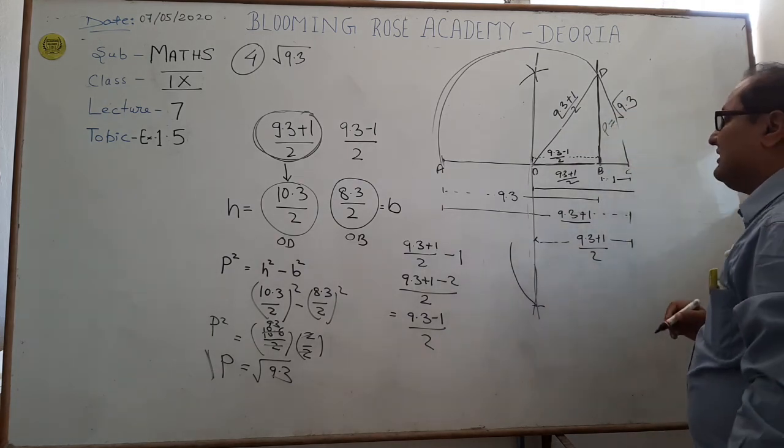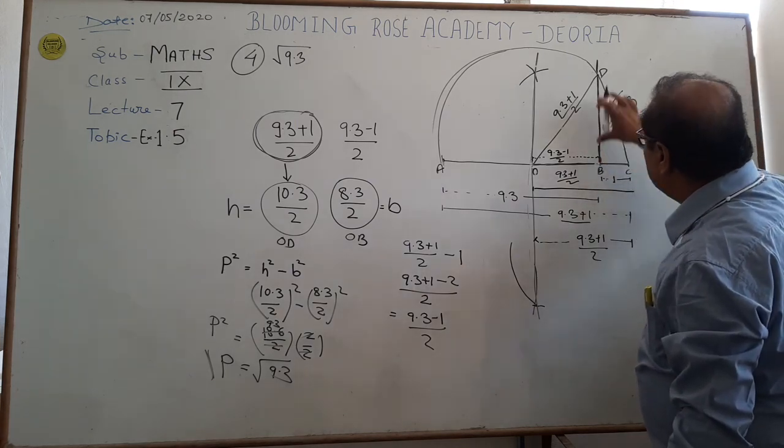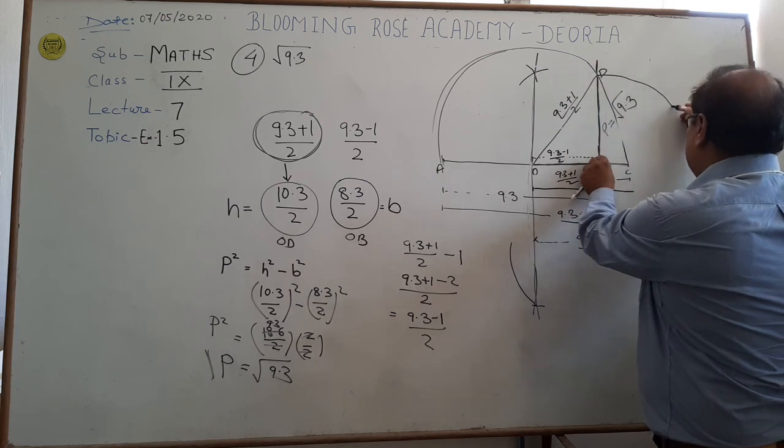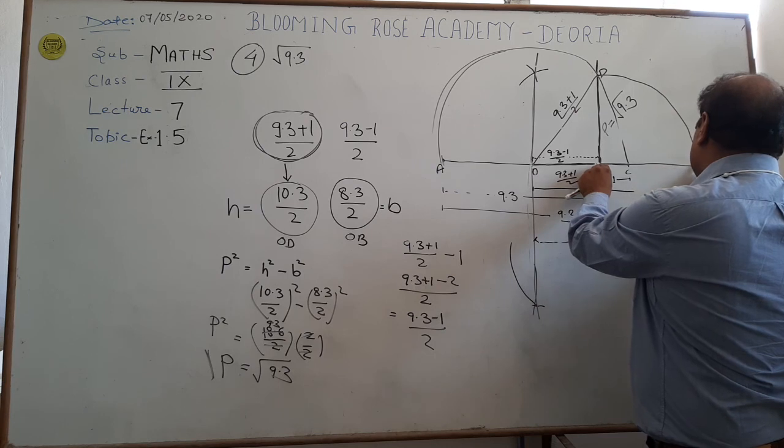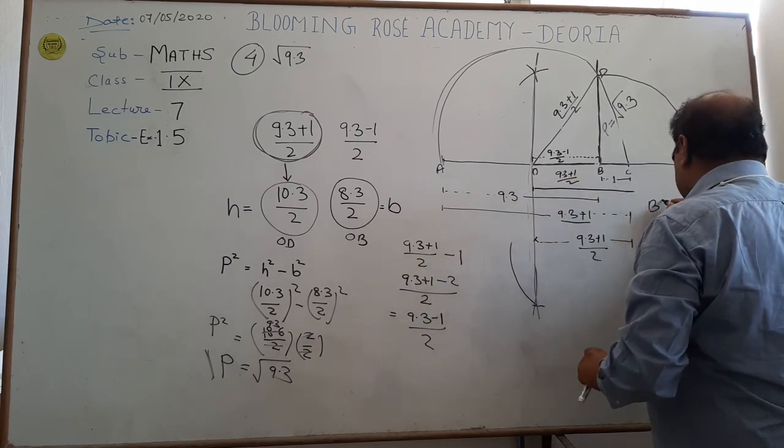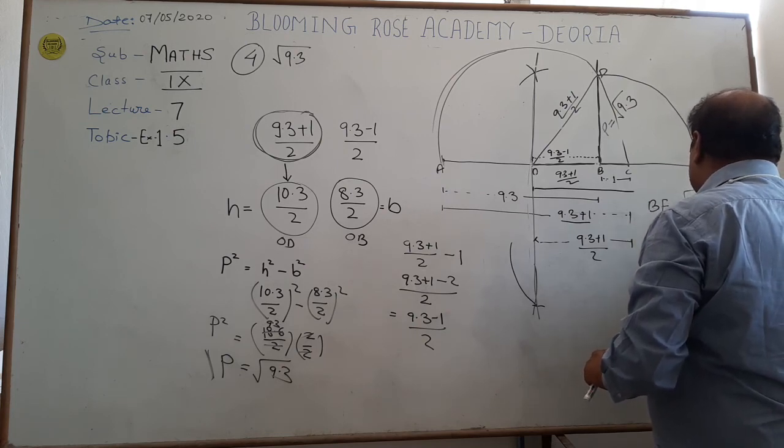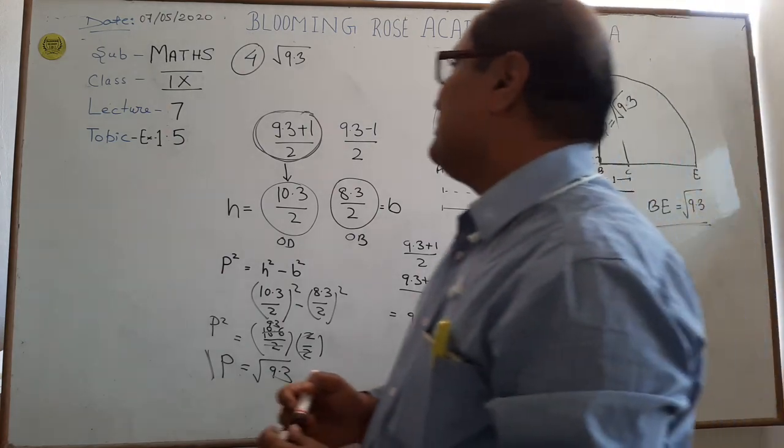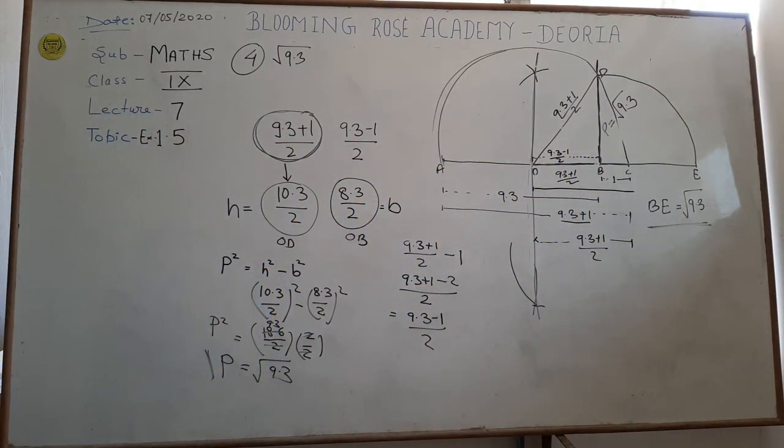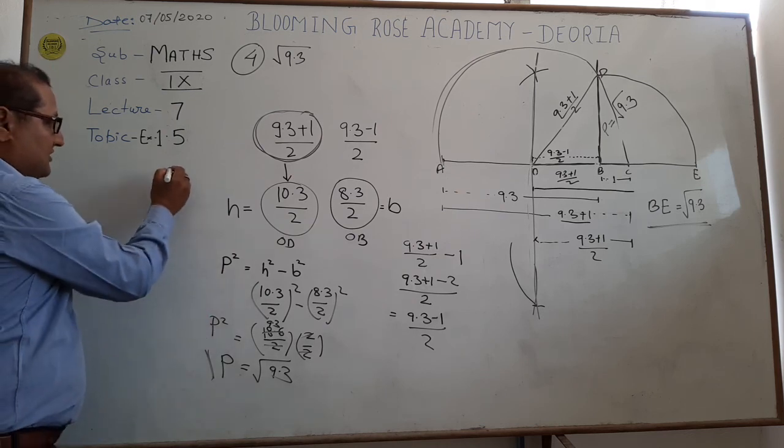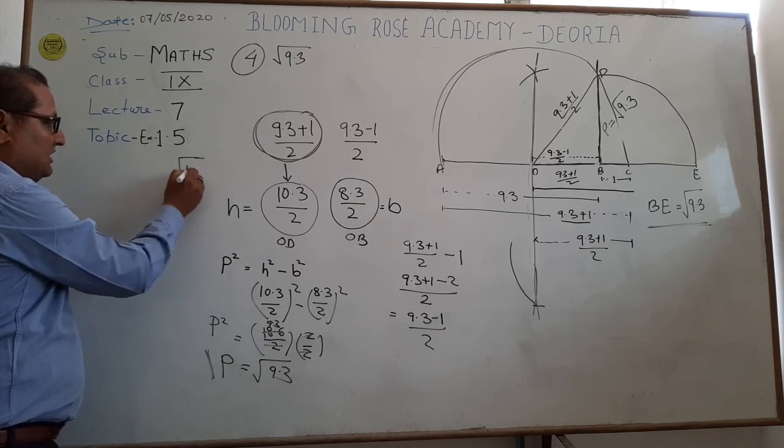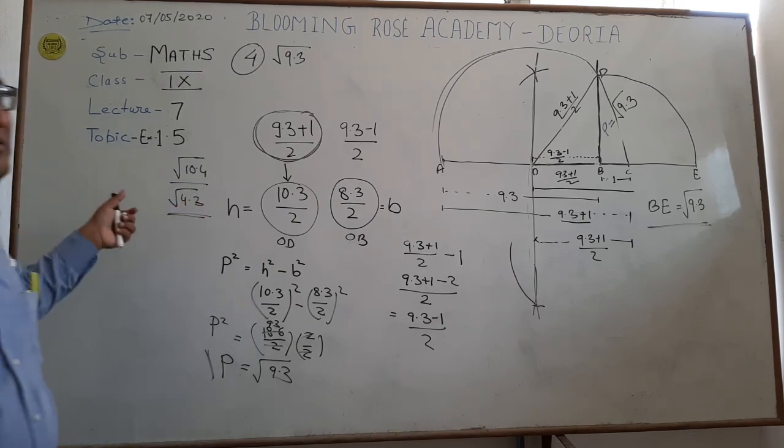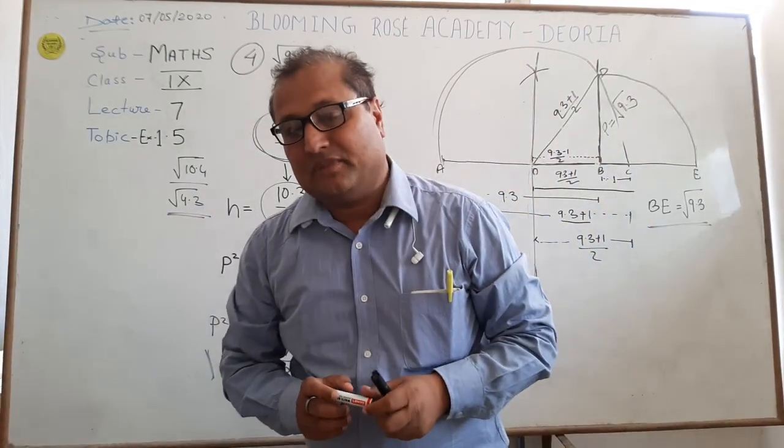This is a very difficult question in your exercise. Student, B E we get root 9.3. Link B E is the representation of root 9.3 unit of the number line. Some other questions we can solve in your notebook and if there is any problem you can ask. Just I am giving some questions for you, root 10.4 and root 4.3. You can solve these two questions and if there is any problem you can ask. Thank you.